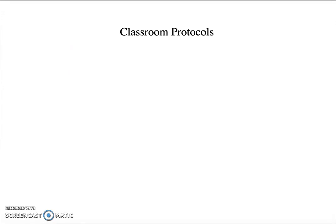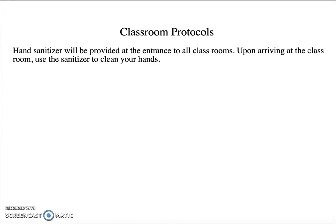What are the classroom protocols you'll need to go through when you arrive for your class and enter the classroom? First, hand sanitizer will be provided at the entrance to all classrooms — upon arriving, use the sanitizer to clean your hands. Second, we're going to be keeping close tabs on attendance in case we need to do contact tracing. Check your name off on the attendance sheet if applicable. Some instructors may have an attendance sheet at the entrance; others may take attendance orally. Your instructor will explain which method they are using.